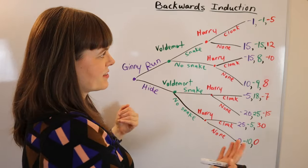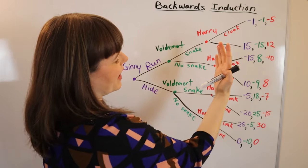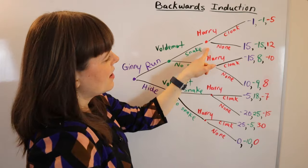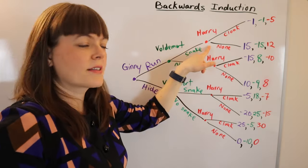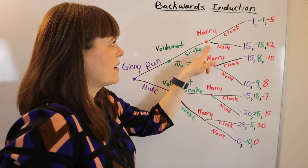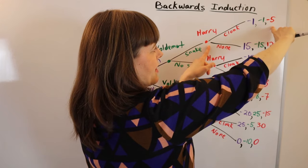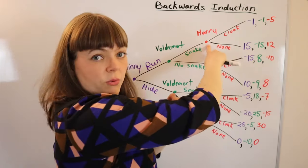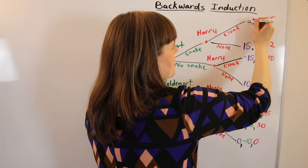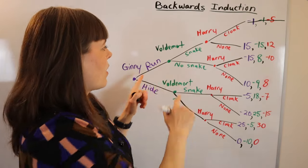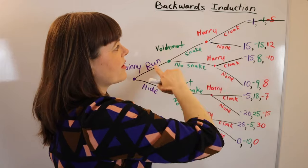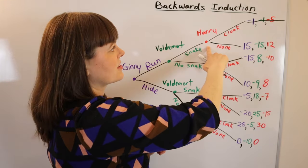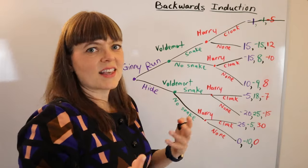The process of backwards induction is to start at the end of the game and solve every last node first. We look at the last node and ask: if Harry finds himself here, what decision will he make? If he brings the cloak he gets negative five; if he doesn't bring the cloak he gets 12. He prefers 12, so we cross out the cloak option. Even if Jenny had a payoff of 100 there, she could never reach it because Harry would not bring his cloak.